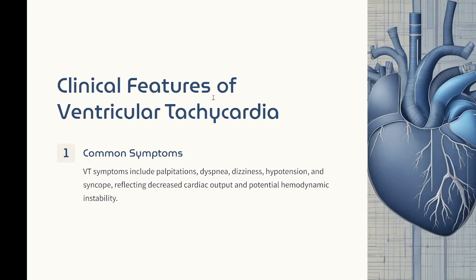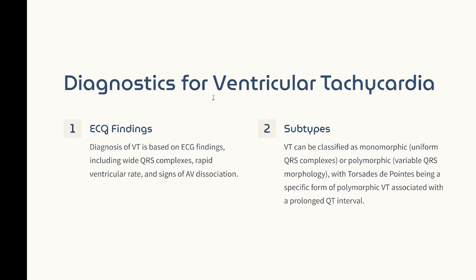Diagnostic ECG findings: wide QRS complexes (≥120 ms), rapid ventricular rate (>100/min), and signs of AV dissociation. Monomorphic VT shows uniform QRS complexes, while polymorphic VT shows variable QRS morphology, with torsades de pointes being a specific form of polymorphic VT associated with a prolonged QT interval.